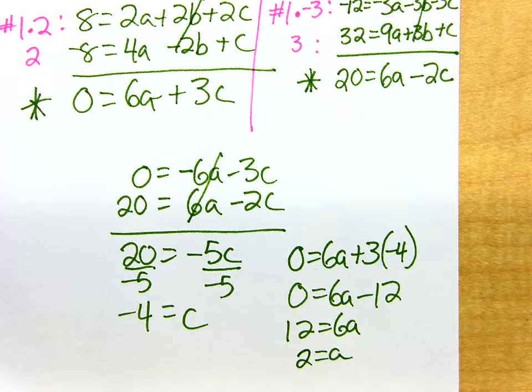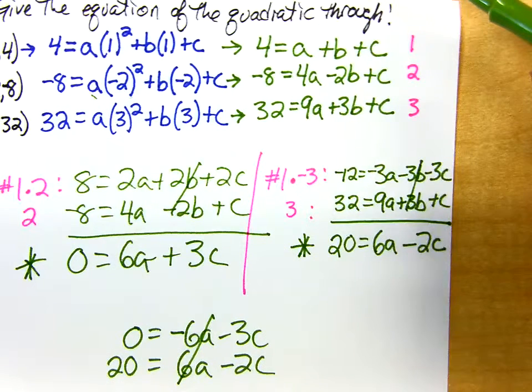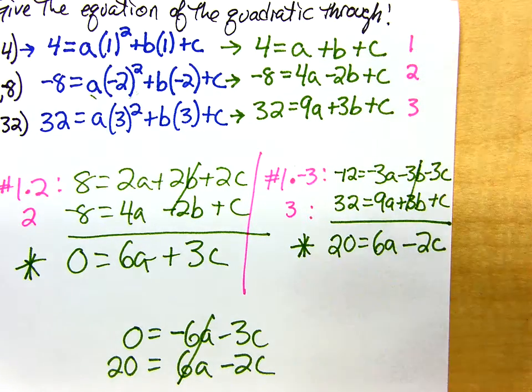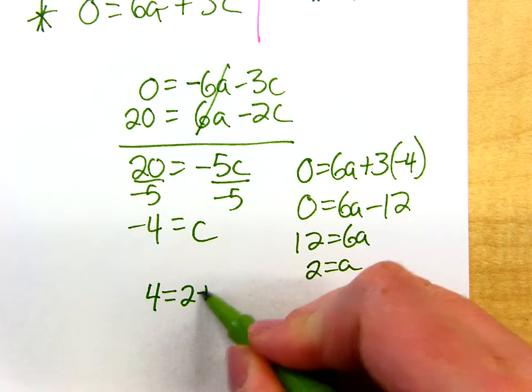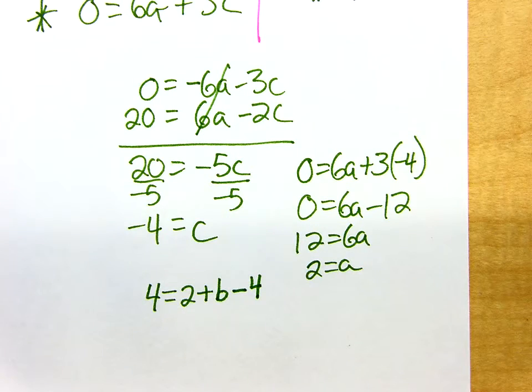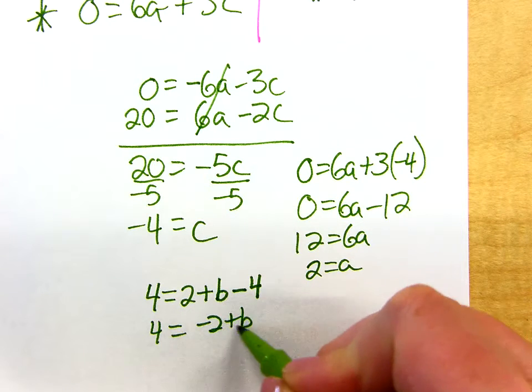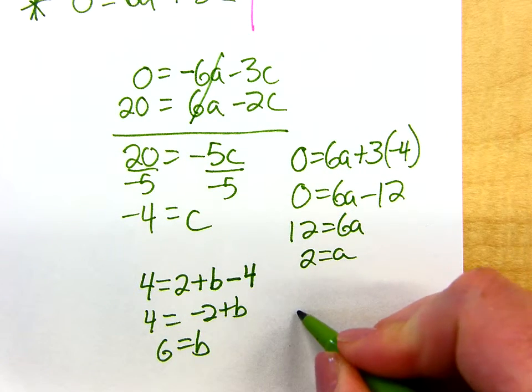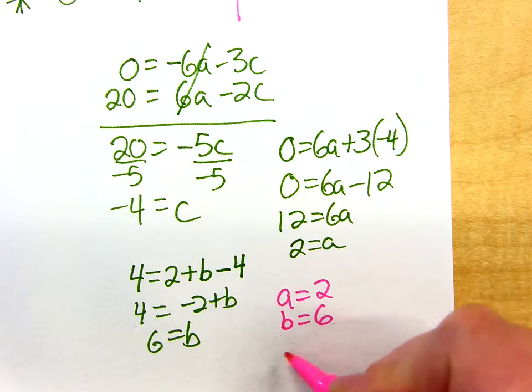And now we're so close. All I have to do now is, right, now you're going to go back to your original 3. Pick any one of the three that you want and plug in the two variables that you have, and you can solve for the last one. We might as well pick the very top one, right? That one was easy. 4 equals a plus b plus c. And now I can just solve for b. So if I write this all nice and neatly, a is 2, b is 6, and c is negative 4.